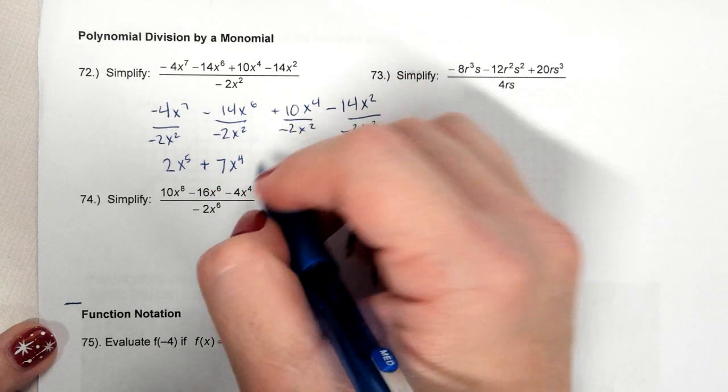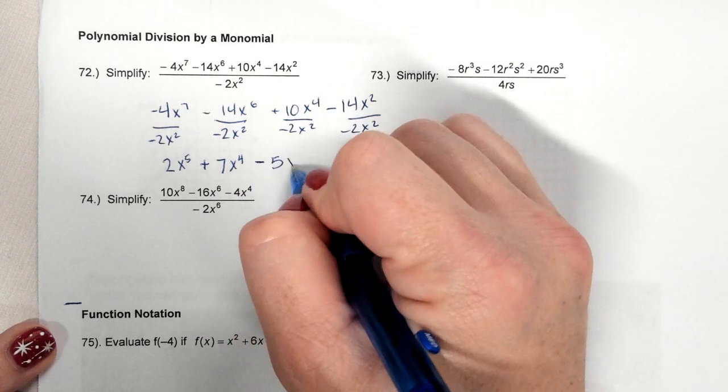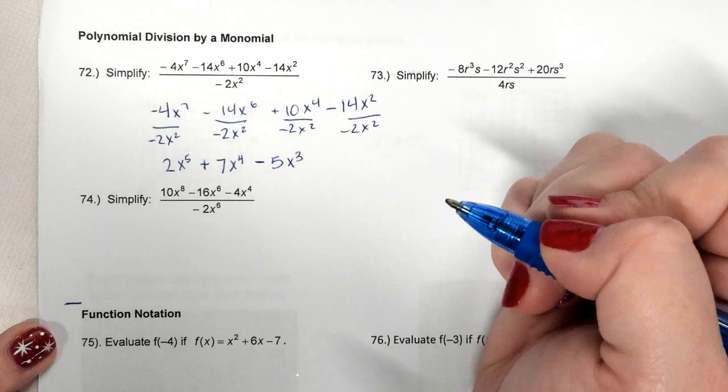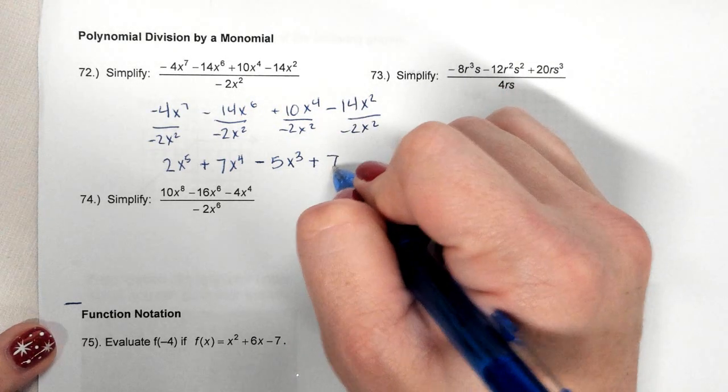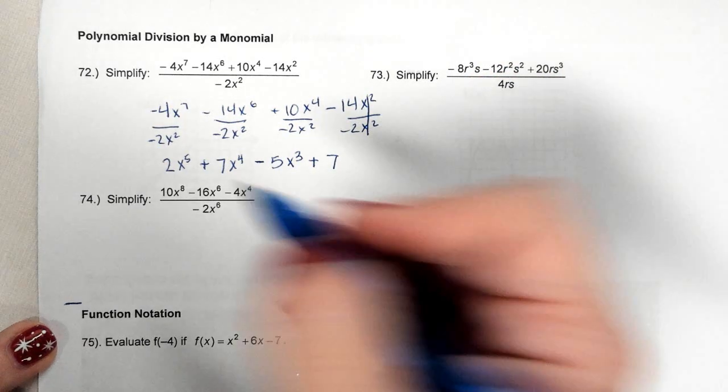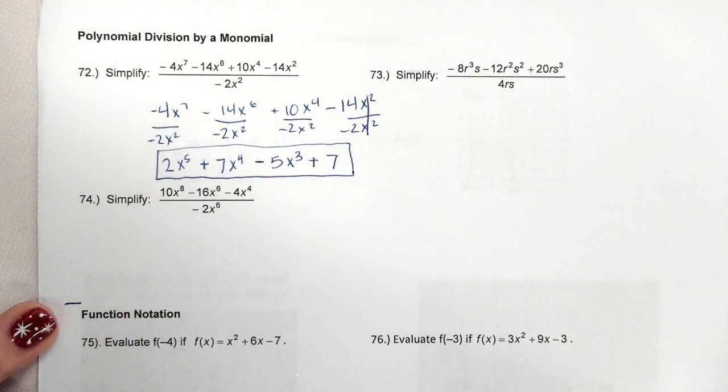Positive divided by negative is negative. 10 divided by 2 is 5. More x's on top: 4 minus 2 is 2. Two negatives make a positive. 14 divided by 2 is 7. x² cancels x². Remember, when they match, they cancel. So there's my answer.